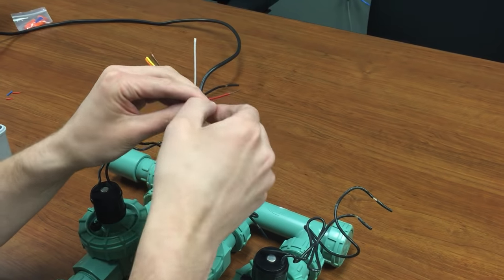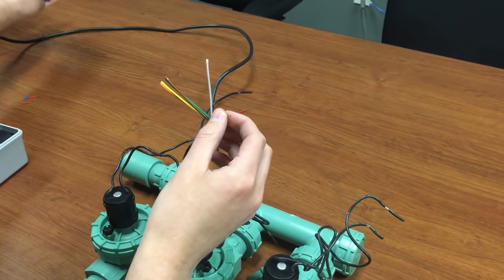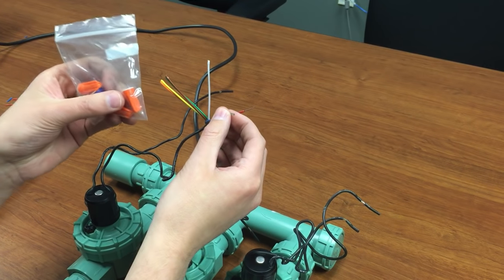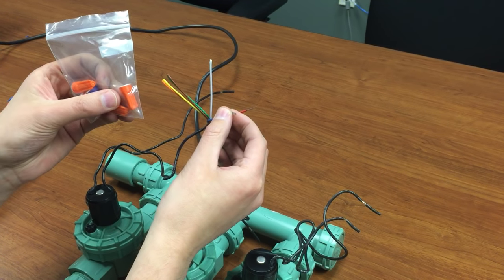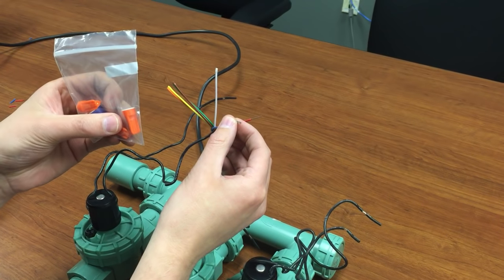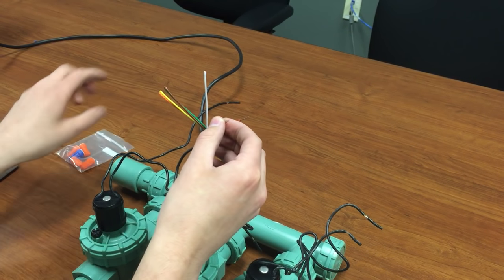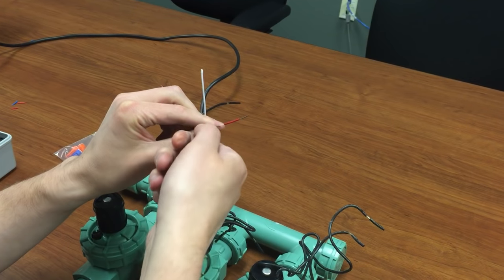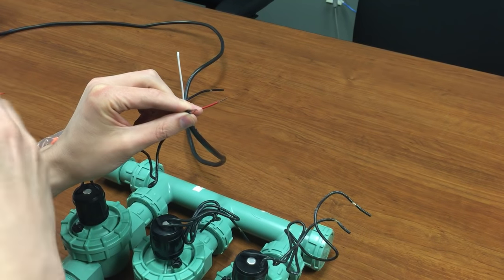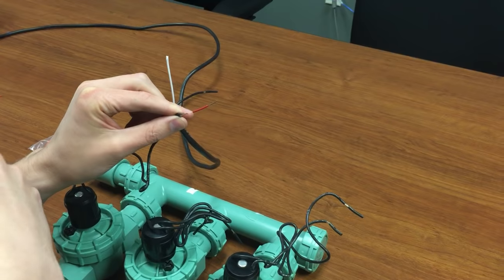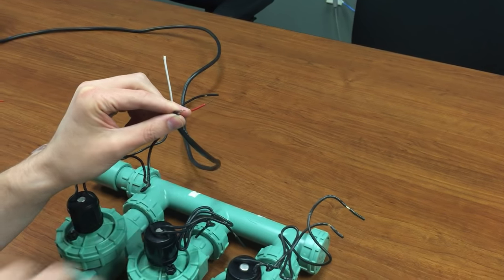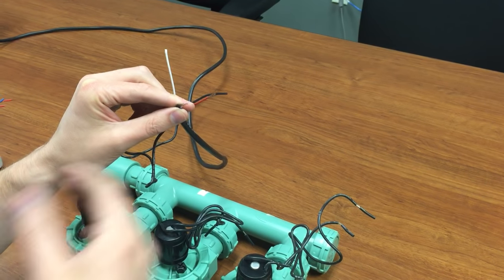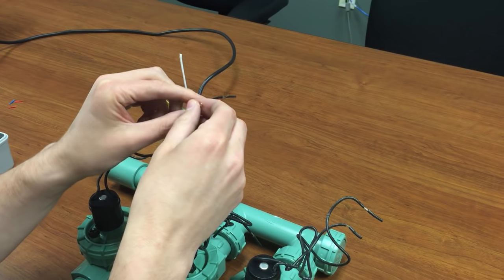You would then twist these together and then use one of the included grease nuts. If they're not included with your solenoid, these of course can be purchased at any hardware store, very inexpensive. You apply those on there, twist those on, and that will give it a waterproof seal so that any moisture that got into the valve box wouldn't affect the wiring and cause a short.